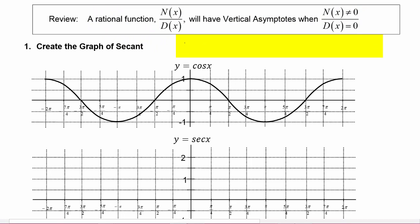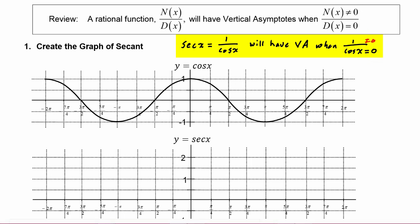We know that secant of x is equal to one over the cosine of x, so that will have vertical asymptotes when cosine of x in the denominator is equal to zero, because we can see that the numerator here never equals zero. So whenever cosine has a root, we know we're going to satisfy this condition.